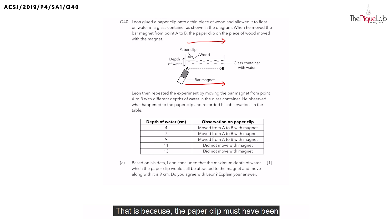That is because the paperclip must have been attracted to the bar magnet. So what did he then do? He then repeated the experiment by moving the bar magnet from point A to point B but using different depths of water instead. After that, he would observe what happened to the paperclips and recorded it in the table below. So let's take a look at our table.